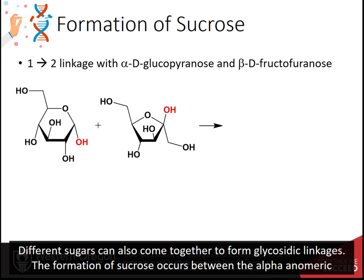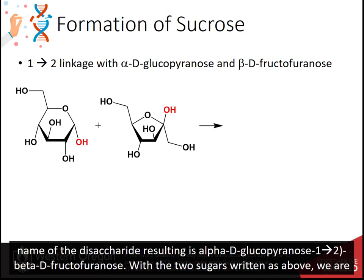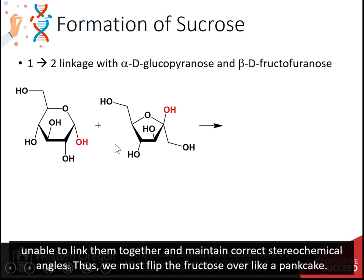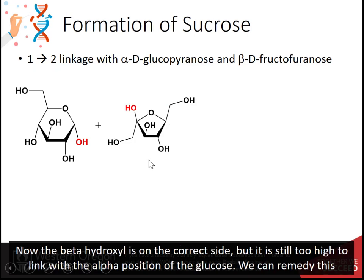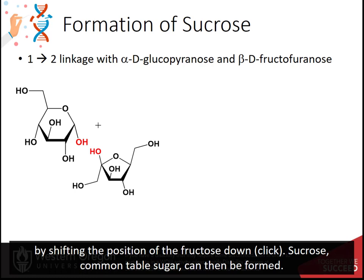Different sugars can also form glycosidic linkages. Sucrose forms between the alpha-anomeric carbon of alpha-D-glucopyranose and the beta-anomeric position of beta-D-fructofuranose — an alpha-1,2 linkage. The full name is alpha-D-glucopyranose 1,2-beta-D-fructofuranose. To maintain correct stereochemistry, the fructose must be flipped over and shifted down, after which sucrose, common table sugar, can be formed.